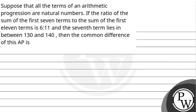Hello, let's read this question. Suppose that all the terms of an arithmetic progression are natural numbers. If the ratio of the sum of the first 7 terms to the sum of the first 11 terms is 6:11, and the 7th term lies in between 130 and 140, then find the common difference of this AP.